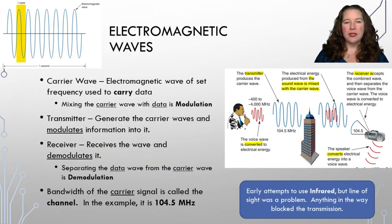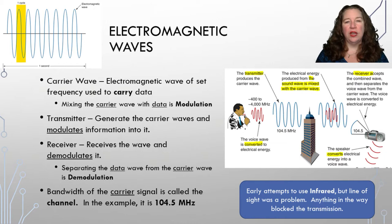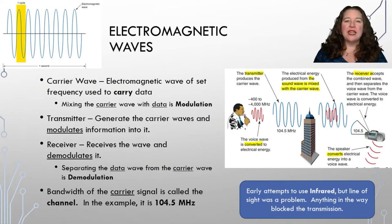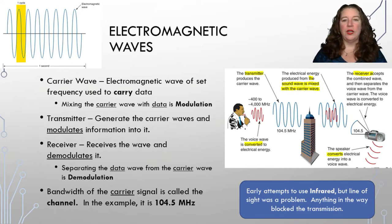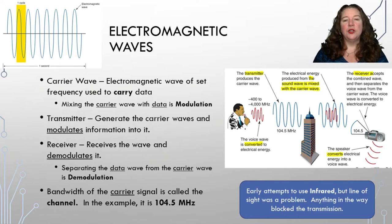The first thing to understand with wireless media is that it works in waves — the same way sound waves work — in a wave pattern. There is a singular cycle of a wave, and the electromagnetic wave travels through our wireless media to get data to you. We use the phrase carrier wave: an electromagnetic wave of a set frequency used to carry data. We take our carrier wave and our data, mix them together, and create what is called modulation.